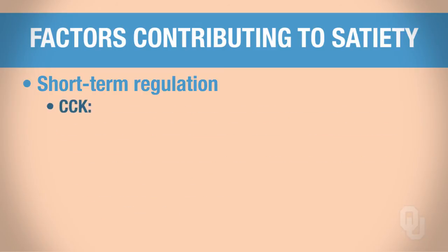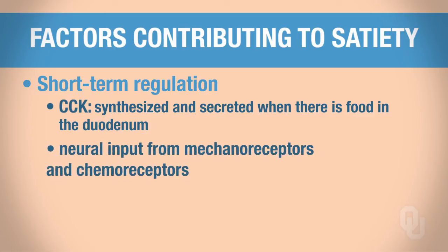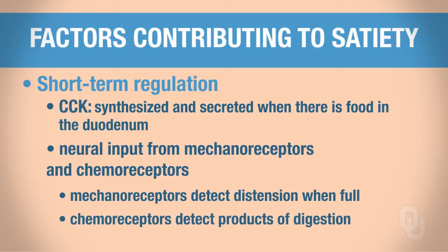CCK is synthesized and secreted when there is a presence of food in the duodenum, also contributing to the feeling of being full. Neural input from mechanoreceptors detects distension of the gut when it is full, signaling satiety. Chemoreceptors detect products of digestion, which also triggers satiety. These are the short-term mechanisms that suppress hunger.